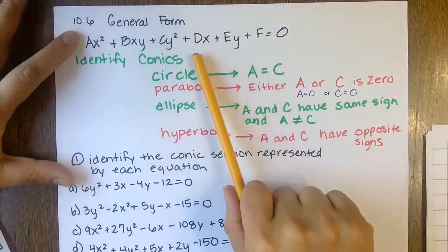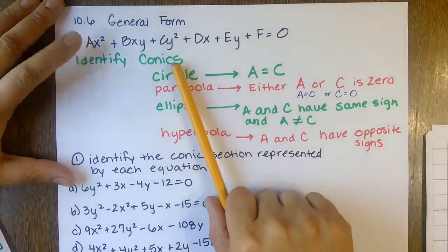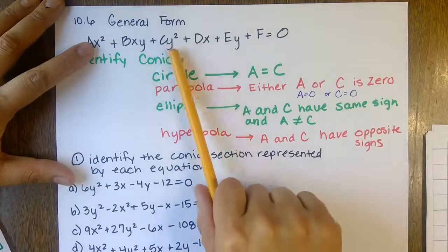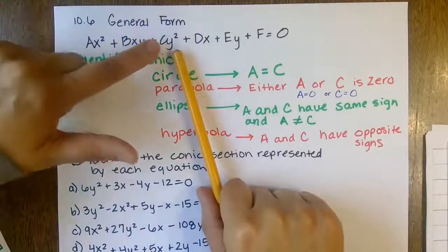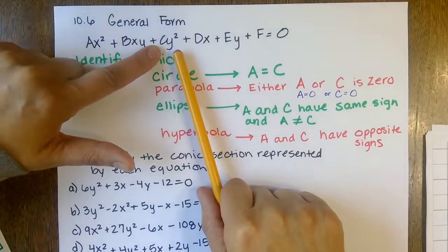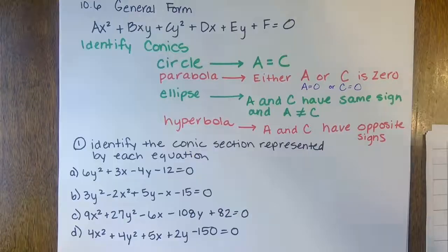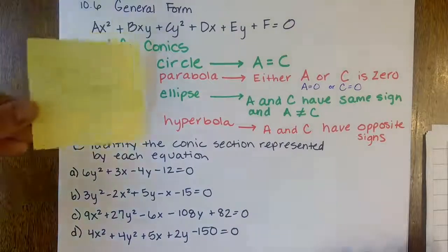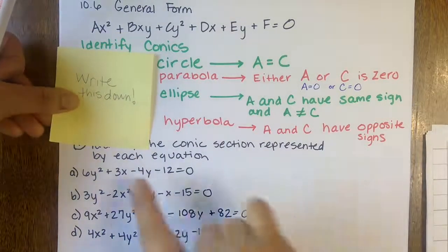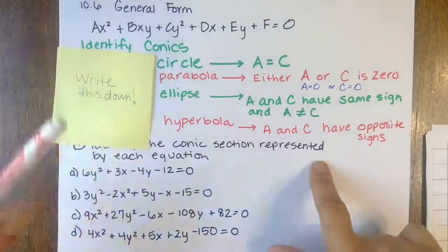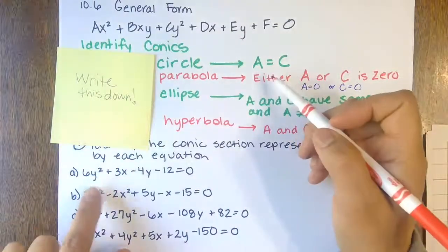Your A value is the coefficient in front of your x² term, and the C value is the coefficient in front of your y² term. That's what we're going to identify. The problem says: identify the conic section represented by each equation — all you have to do is find your A and C values.